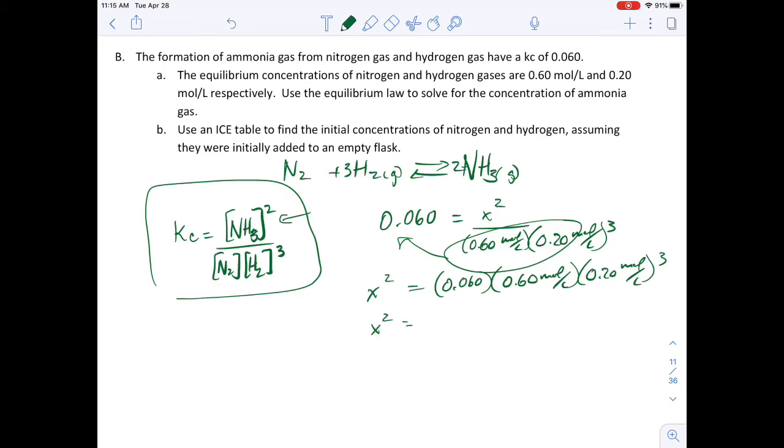So my x squared is going to give me a number. So I get x squared equals 0.000288, and if I take the square root of that, I get x is equal to 0.016 or 17 mole per liter will be my x value.